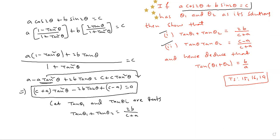The sum of roots formula gives tan θ₁ + tan θ₂ = 2b / (c + a). Now for the product of the roots — this is from the quadratic equation topic in 10th/intermediate class — the product is constant / leading coefficient = (c − a) / (c + a).